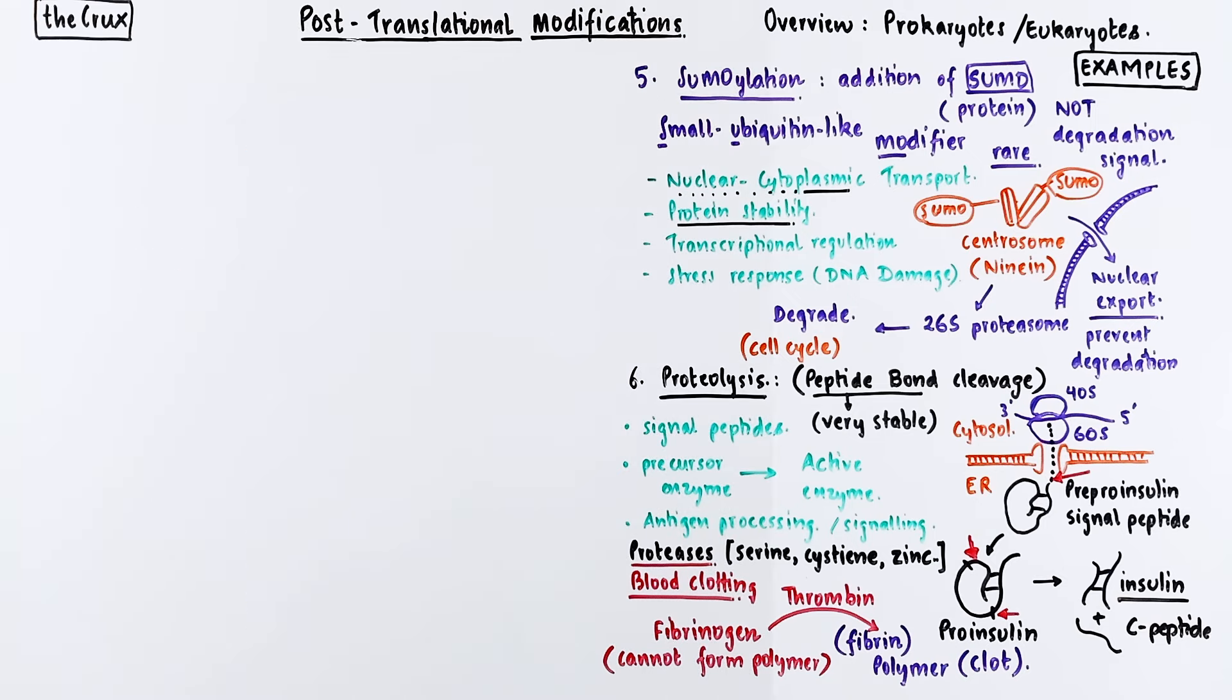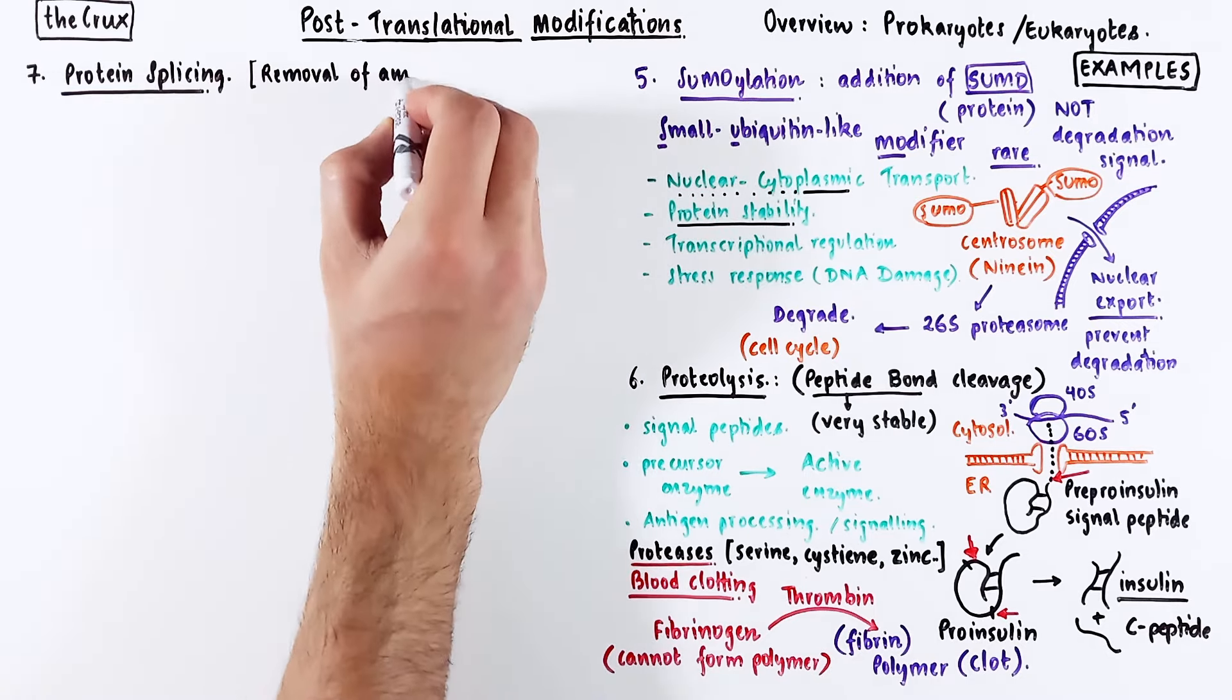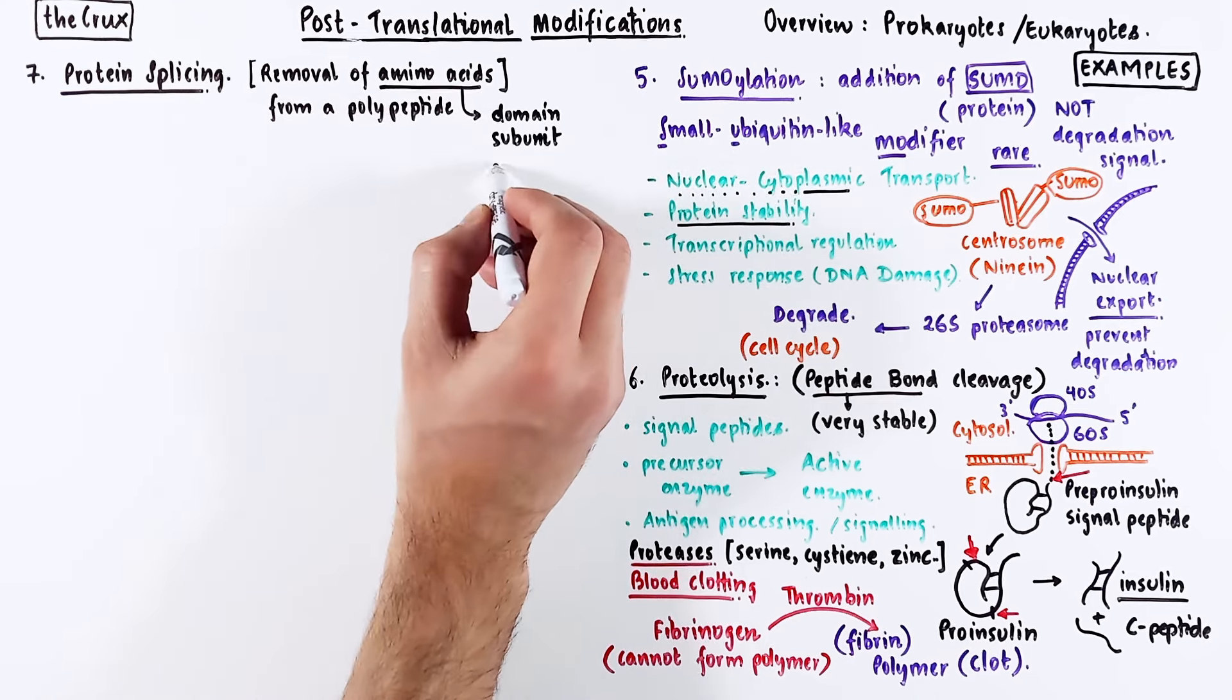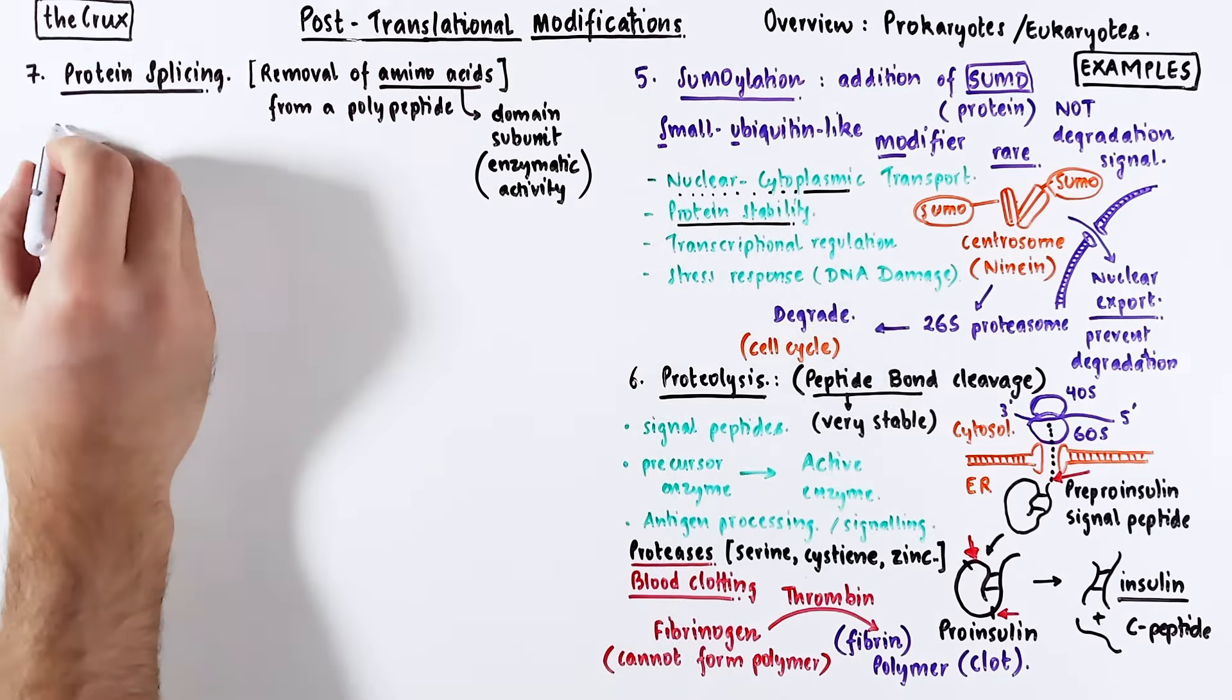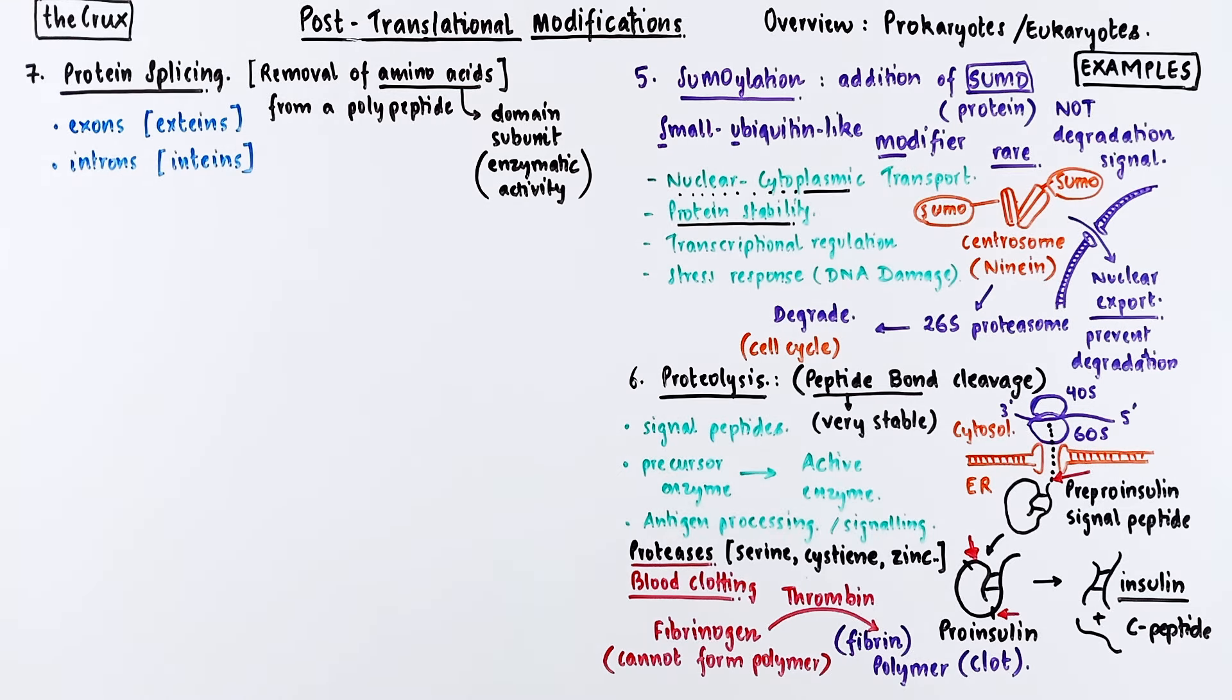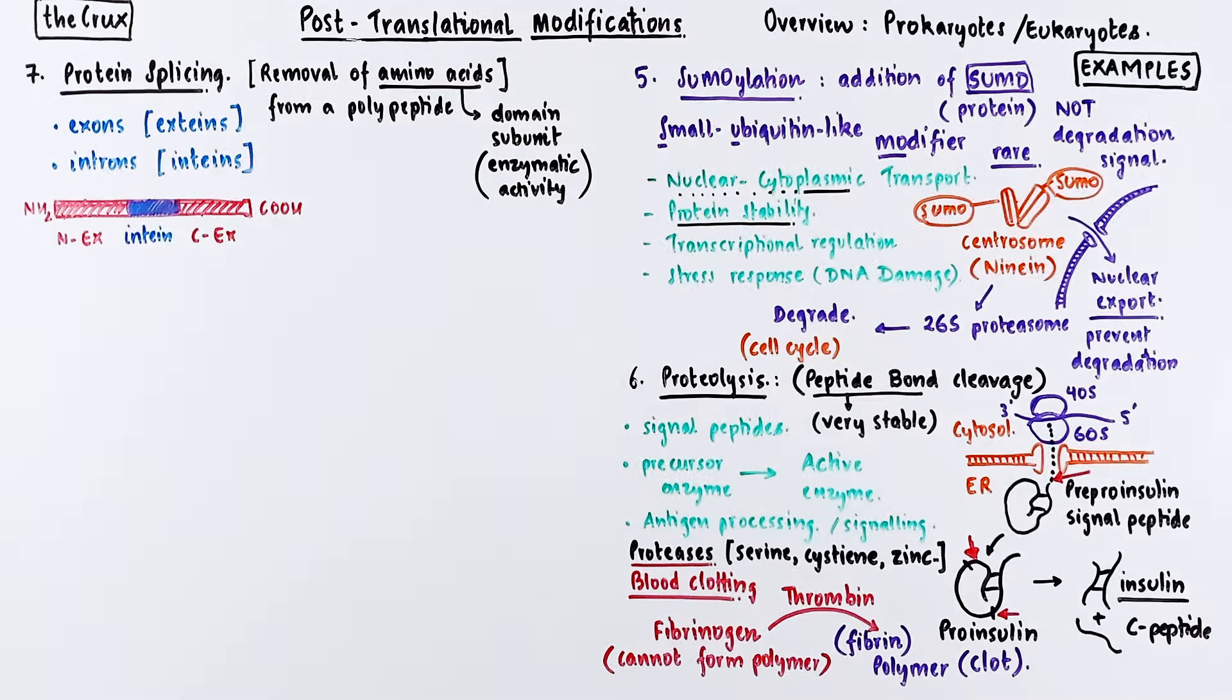On to the last modification, and this one is bizarre. This is protein splicing, the removal of amino acids from a protein. These amino acids can be a domain or subunit with enzymatic activity. The concept is very analogous to RNA splicing with exons and introns. In proteins, you call them extines and intines. Typically there's only one intine present in a given protein, and it's very rare that proteins have intines.